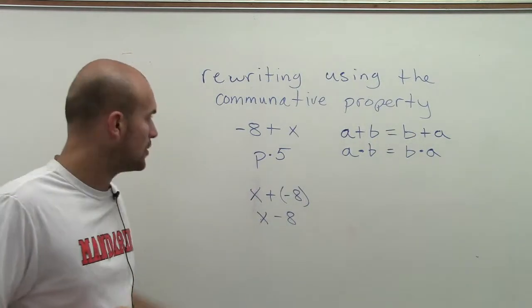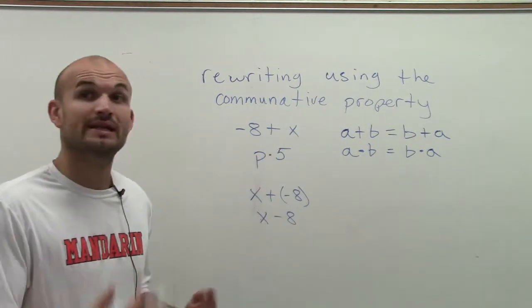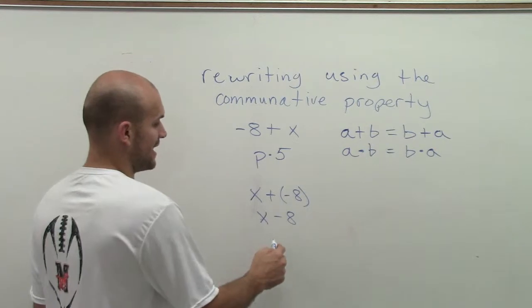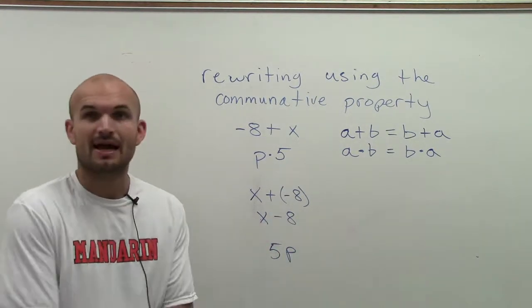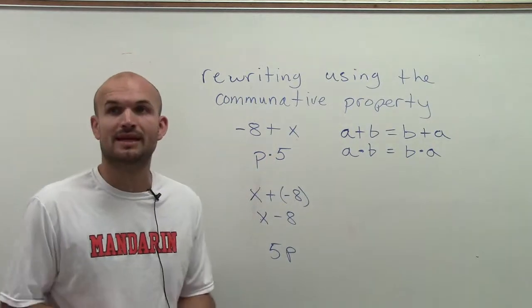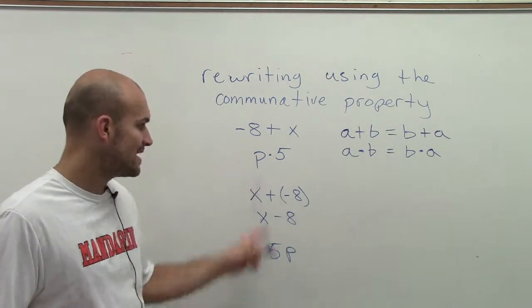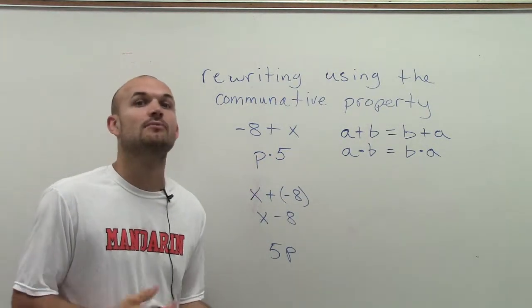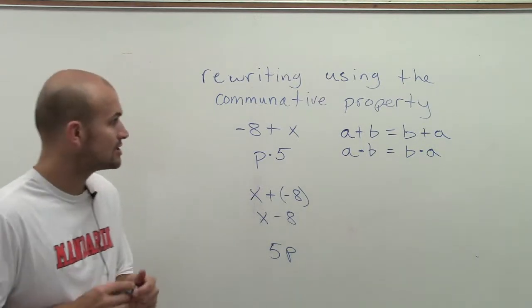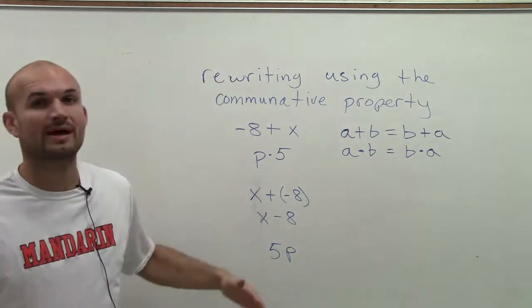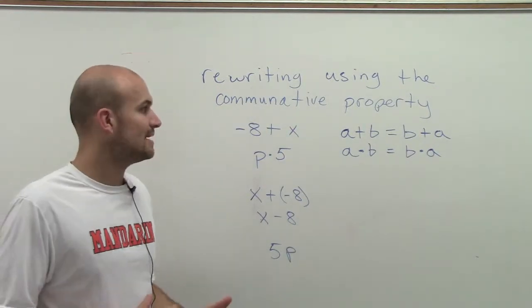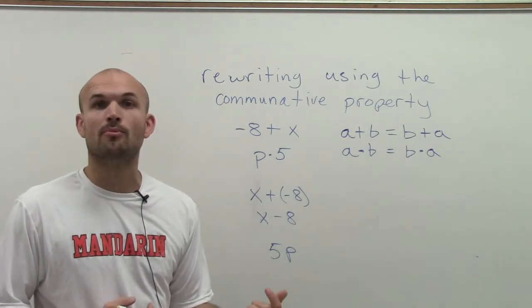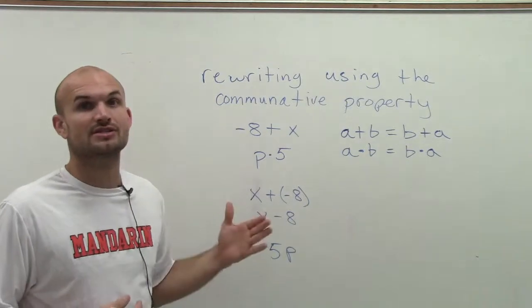Also, a lot of times we get a variable times a number. We need to understand that we can rewrite that as five times P. A lot of times we even drop that multiplication sign just to represent that whenever you have a number next to your variable, that multiplication is going to occur. So here are some important ways that we're going to rewrite using the commutative property that might happen very quickly when we're doing a problem, so you need to make sure you understand what's going on.